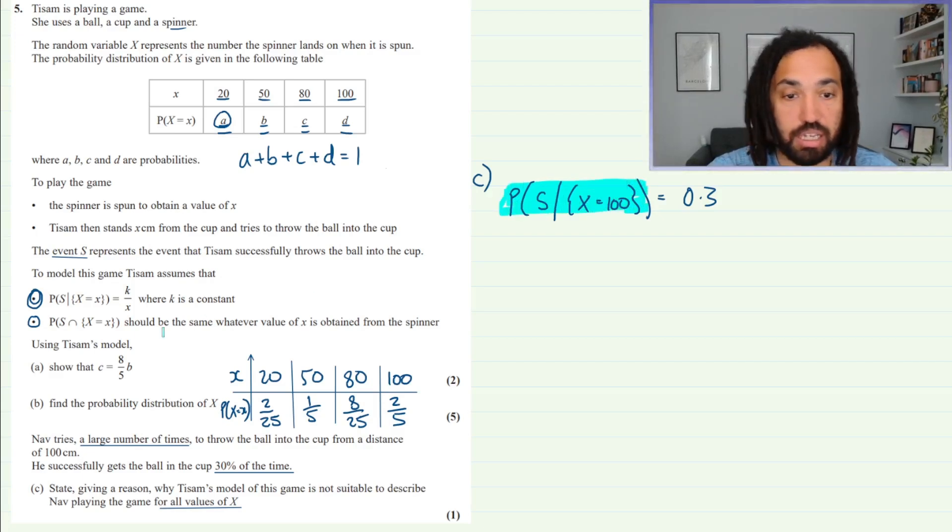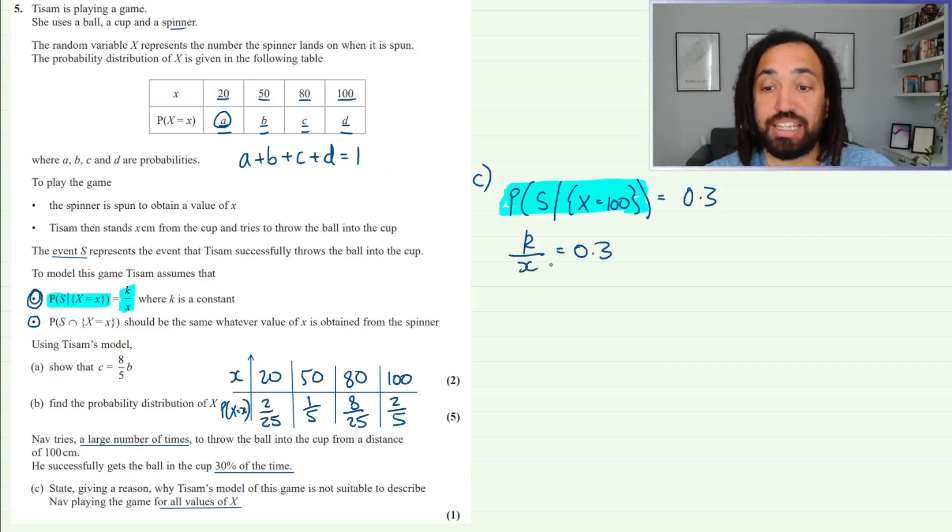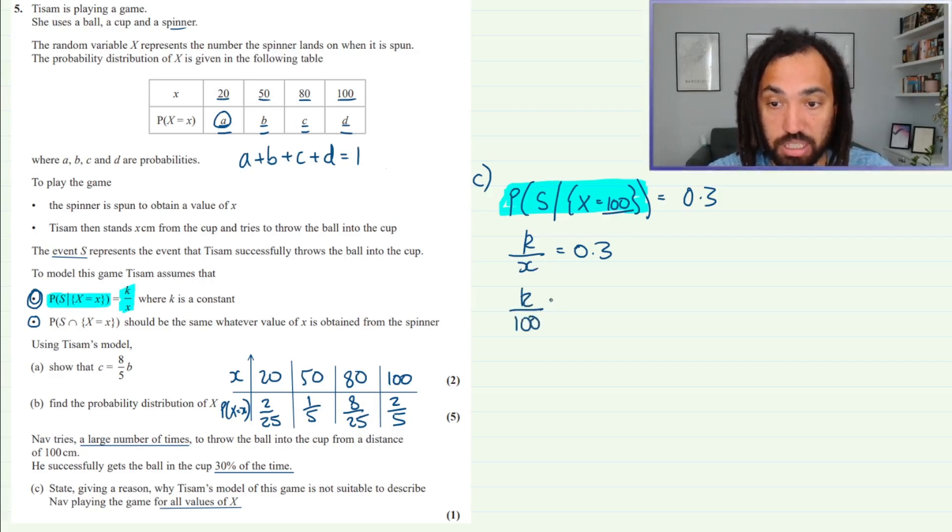And now it says state giving a reason why Tyson's model of this game is not suitable to describe Nav playing the game for all values of x. That's really important. We know from our information that this should be equal to k over x where k is a constant. So if that's equal to k over x, then we have k over x is equal to 0.3, and the x that we used in this particular situation was 100. So this tells me that k over 100 equals 0.3, which means that k is equal to 30.